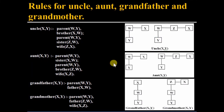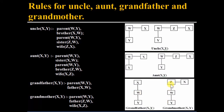Similarly for aunt: X is the aunt of Y if W is the parent of Y and X is the sister of W. Otherwise, W is the parent of Y, Z is the brother of W, and X is the wife of Z, then X will be the aunt of Y. For grandfather: W is the parent of Y and X is the father of W. For grandmother: W is the parent of Y, Z is the father of W, and X is the wife of Z — meaning the grandfather's wife — so X will be the grandmother of Y.